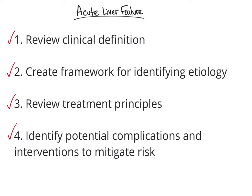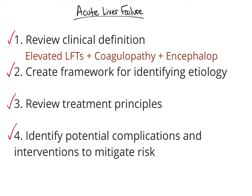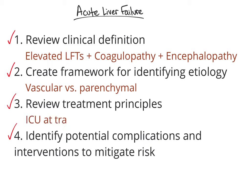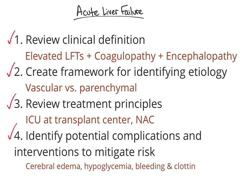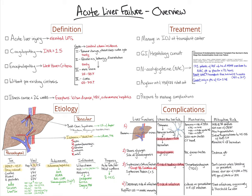In this video, we reviewed the clinical definition of acute liver failure — elevated LFTs plus coagulopathy plus encephalopathy in a patient without pre-existing cirrhosis and an illness course less than 26 weeks. We then created the vascular versus parenchymal framework for identifying the etiology. We reviewed treatment principles including the importance of transfer to an ICU at a transplant center and NAC for all patients. Finally, we discussed potential complications of acute liver failure including cerebral edema, hypoglycemia, bleeding and clotting, and infection. Shown is an overview of each objective's whiteboard.